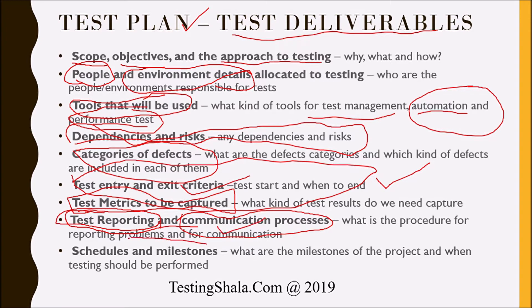The last item in the test plan is schedules and milestones. We clearly document what our schedule is — for example, a six-month duration would be further split into milestones, detailing what each milestone covers and what we are going to achieve out of each milestone. This helps everybody understand what we are going to achieve from a testing perspective at each milestone.